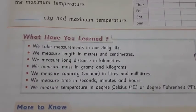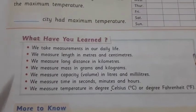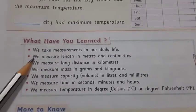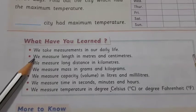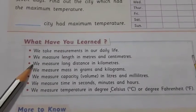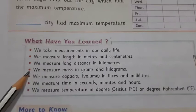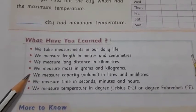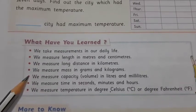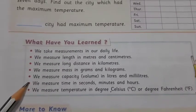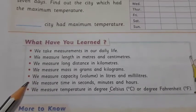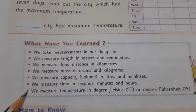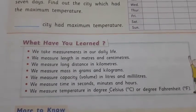Let us revise what we have learned today. Number one: We take measurements in our daily life. Number two: We measure length in meters and centimeters. Number three: We measure long distances in kilometers. Number four: We measure mass in grams and kilograms. Number five: We measure capacity and volume in liters and milliliters. Number six: We measure time in seconds, minutes, and hours. Number seven: We measure temperature in degree Celsius or degree Fahrenheit.